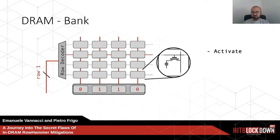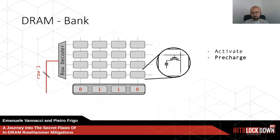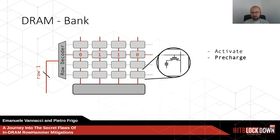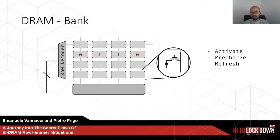Inside bank 0, the row decoder receives an activate command for row 1. An activate command is needed to perform any operation on stored data — it brings data down to the row buffer by toggling the voltage on the word line, opening the transistor and connecting data to the bit lines. Once data is in the row buffer, the capacitor discharges, so a precharge command is needed to restore data back into the cells. Precharge is the inverse of activate.